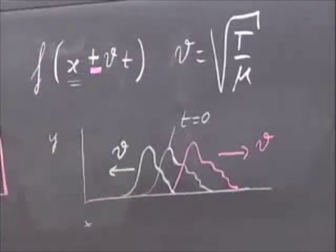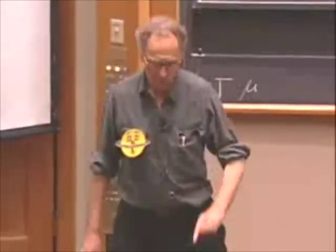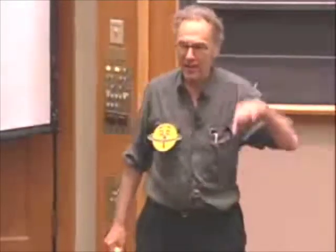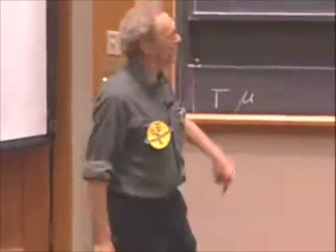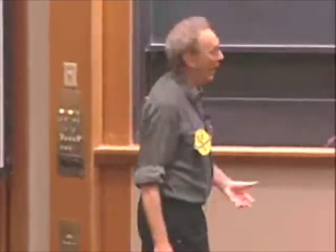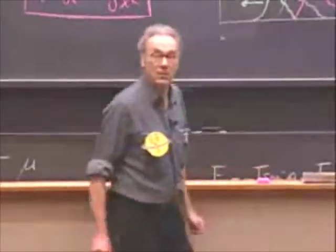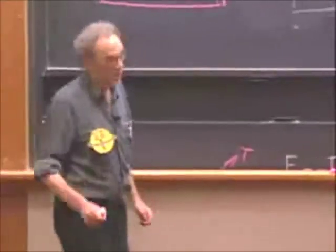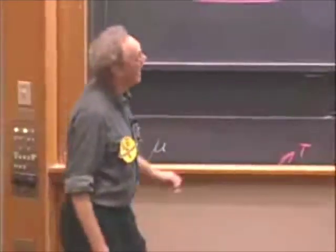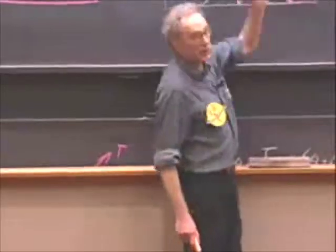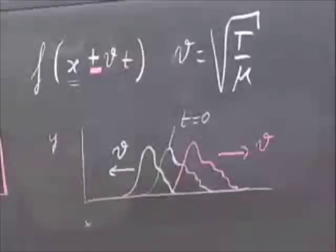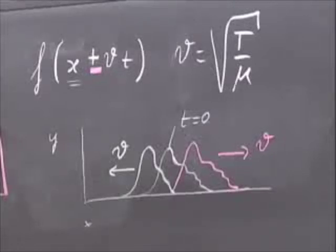You now understand why, when I wiggled here, the string had no choice — it must propagate the function that I generated, and it must propagate that with the speed: square root of T divided by mu. We derive the speed of propagation for that string.